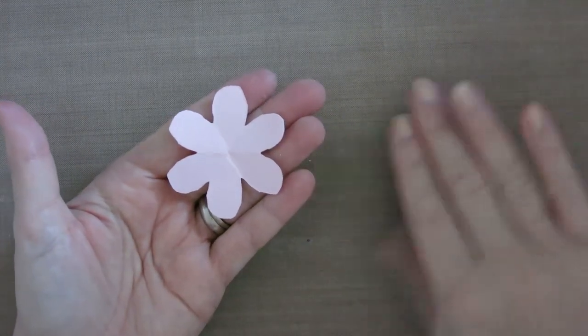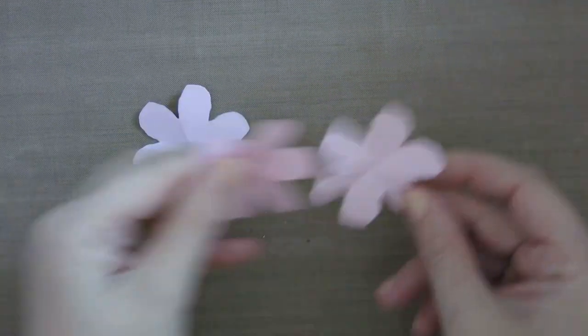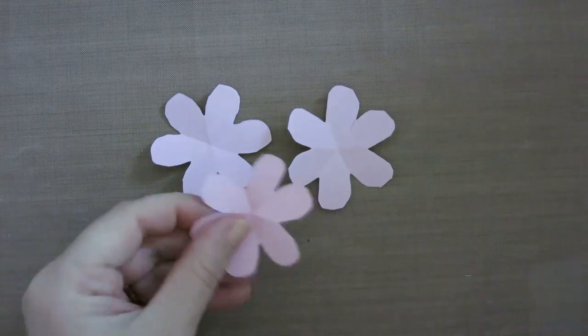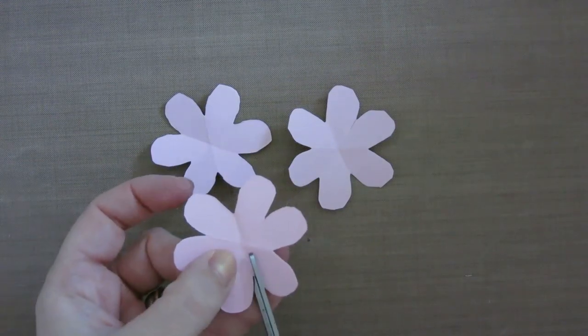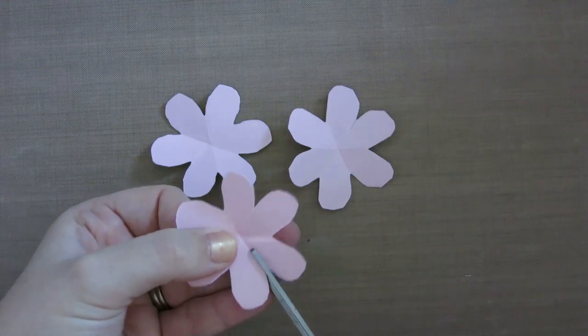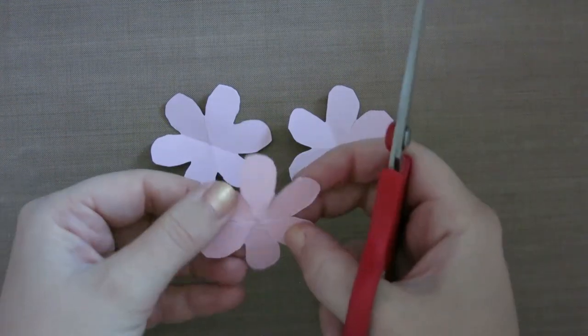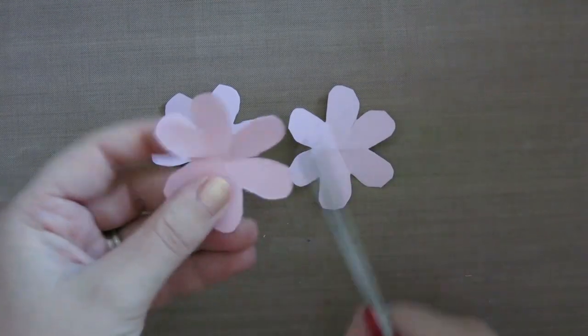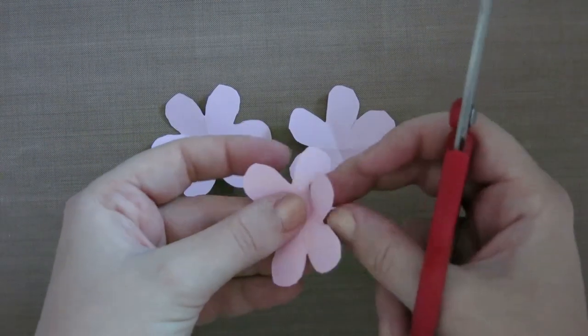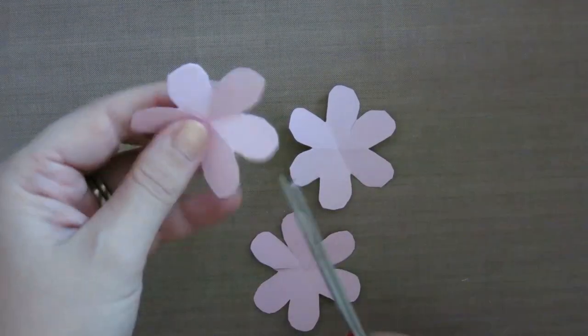So now you have what looks like a six-petaled flower. I'm going to trim in a little bit towards the center. Now you don't want to go all the way into the center because if you do your petals will fall off, but you also want to make sure you're going in far enough so that when you're building your flower you can actually bring the petals up and have that center piece be relatively small.